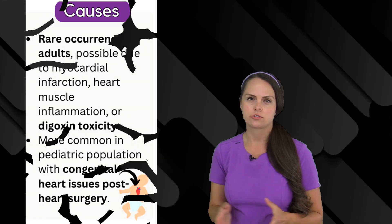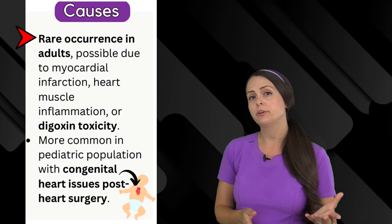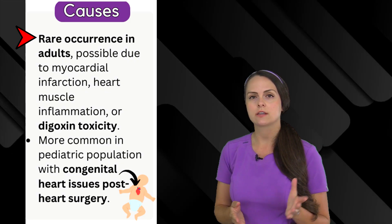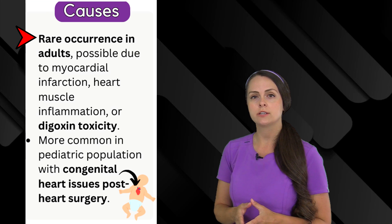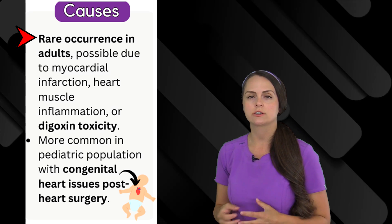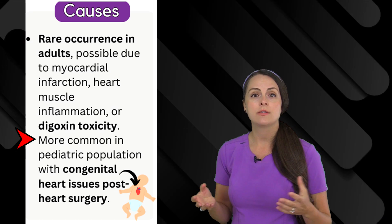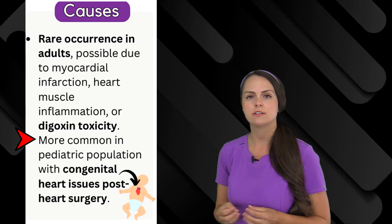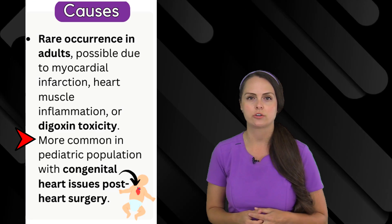What causes junctional tachycardia? It's actually pretty rare in adults, but if it does occur, it could be due to a myocardial infarction, inflammation of the heart muscle, or digoxin toxicity. It tends to occur more in the pediatric population who have had congenital heart defects and are recovering from surgery.